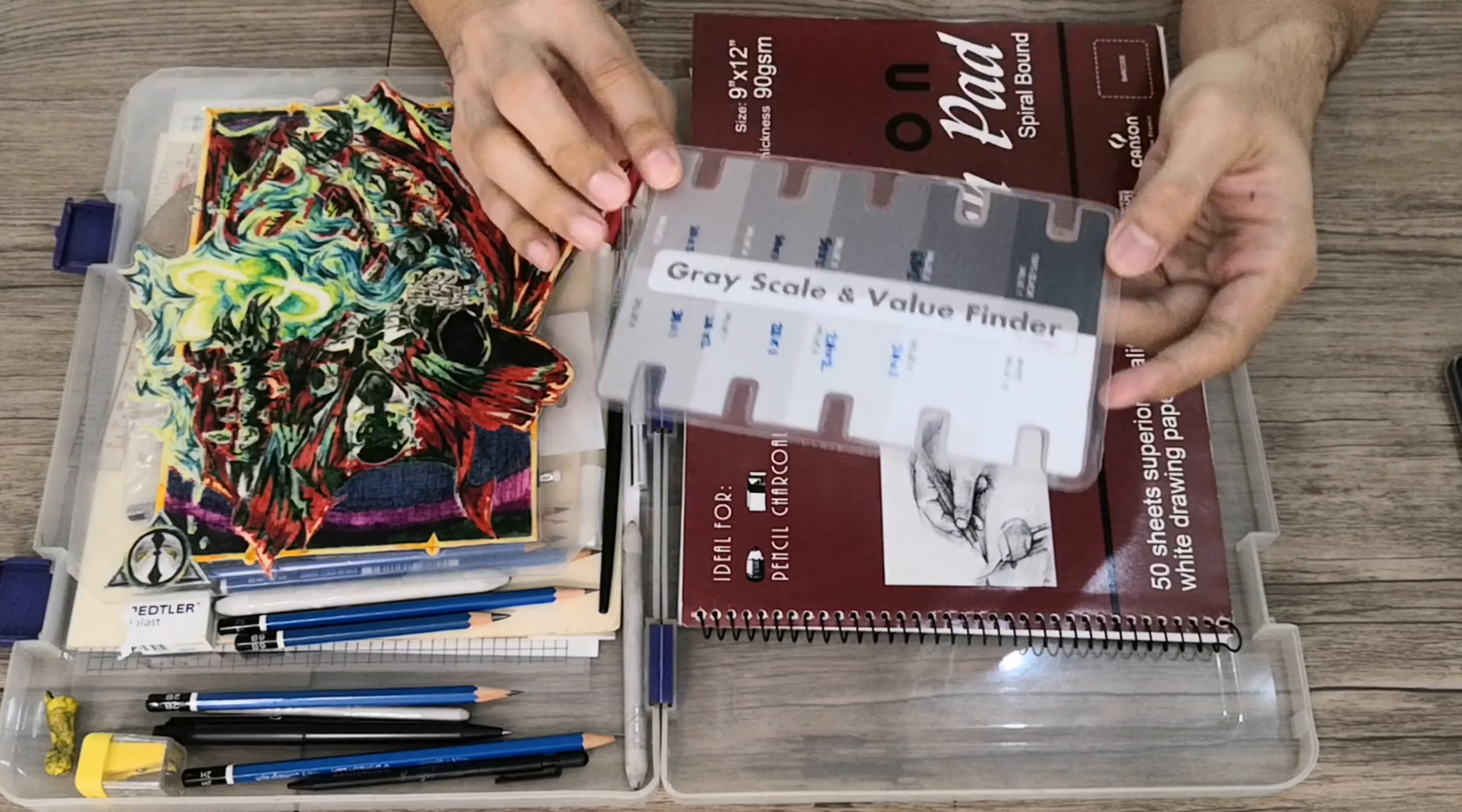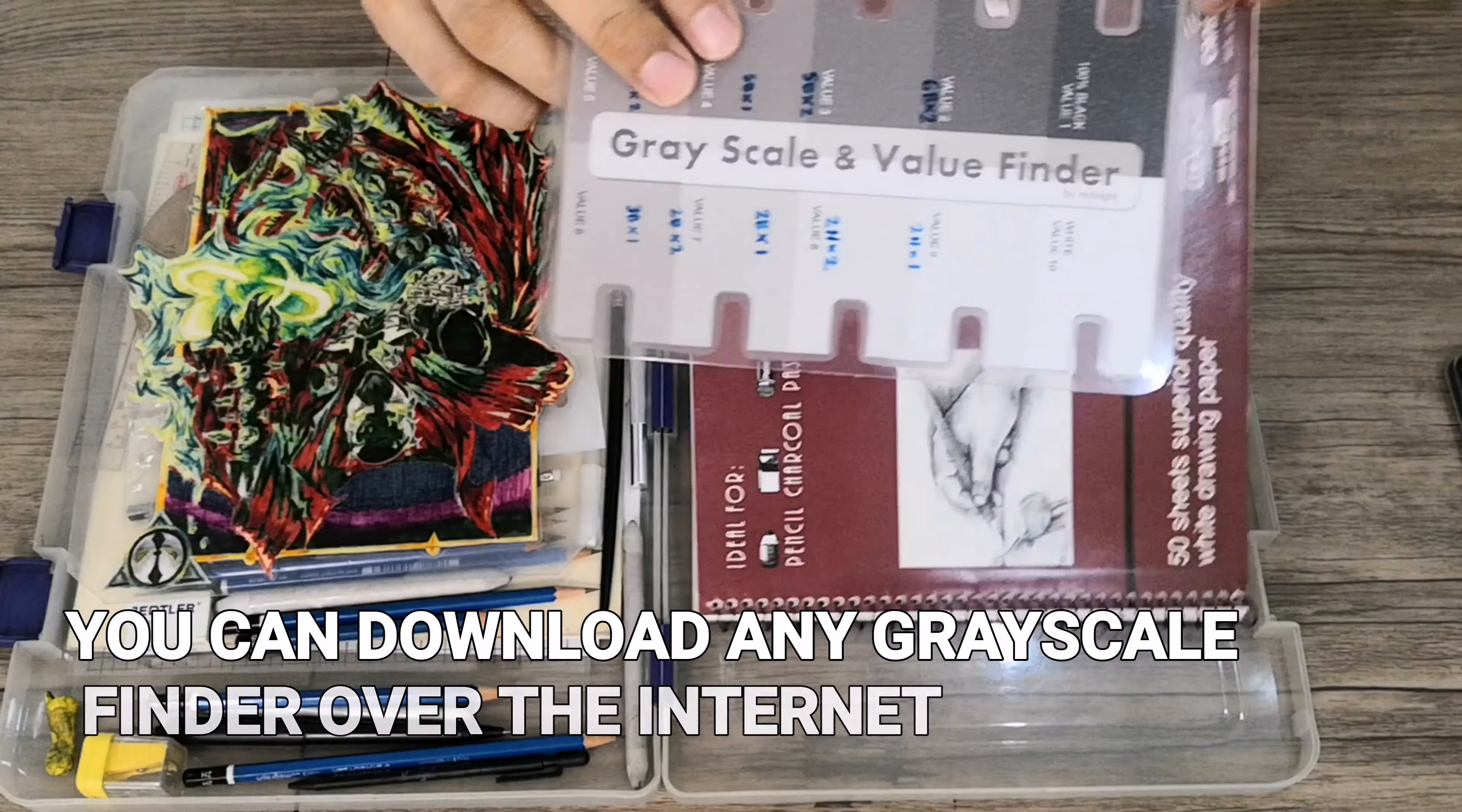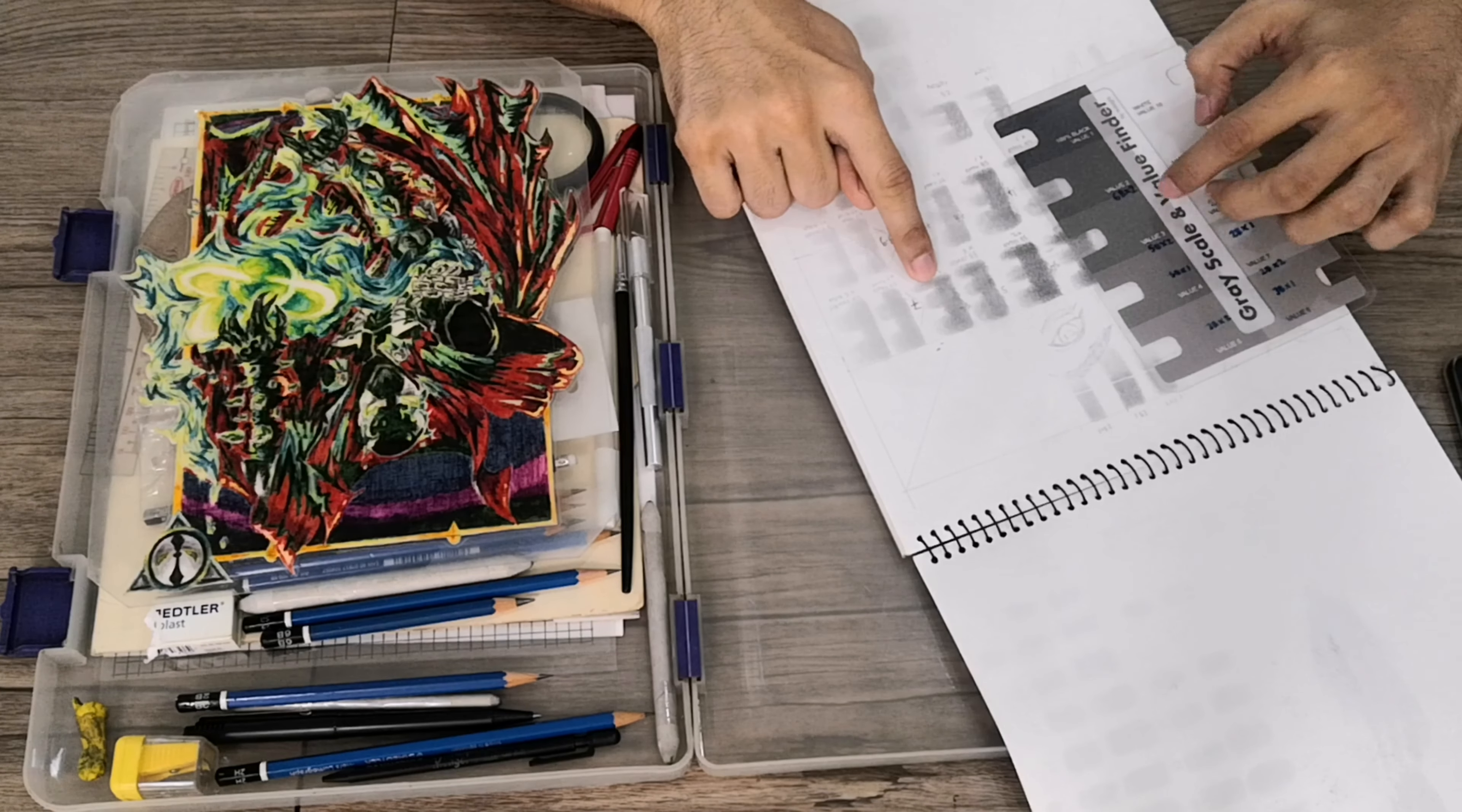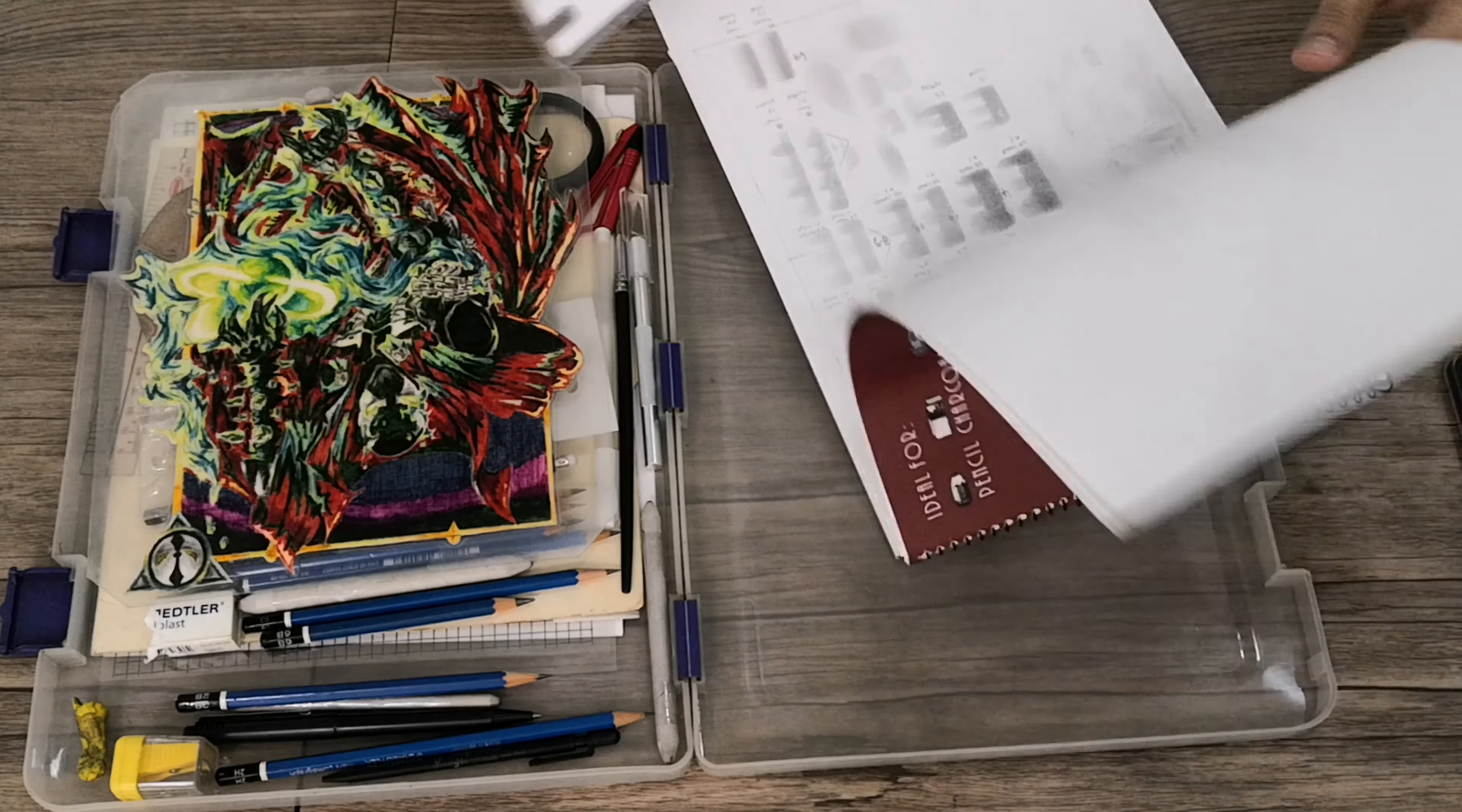Next we have this grayscale value finder. I'll also be explaining later how to use this. Just to give you a quick run-through, you'll be using this comparing it with the different hues of colors or shades of gray. I will explain more on that in other videos.